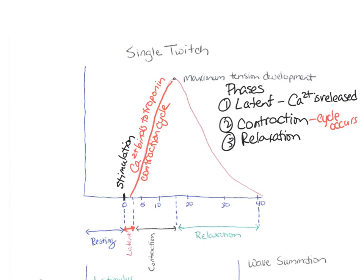The contraction phase lasts about 15 milliseconds. Then finally we get to the relaxation phase, which takes about 25 milliseconds. During this period, calcium is going to decrease because the calcium ions are being pumped back into the sarcoplasmic reticulum. The active sites are covered up by tropomyosin, and then those active cross bridges start to decrease. With fewer cross bridges, tension decreases to a resting level. During the relaxation phase, calcium is pumped back into the sarcoplasmic reticulum.